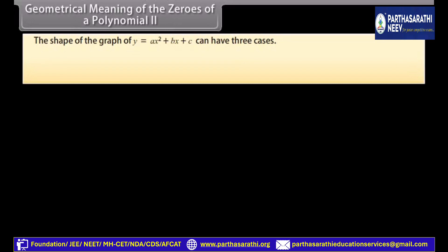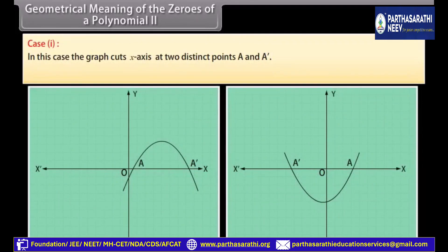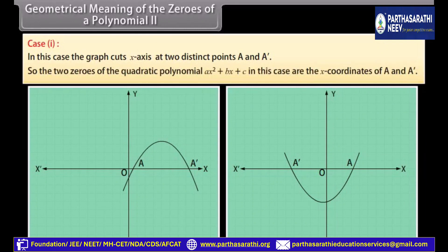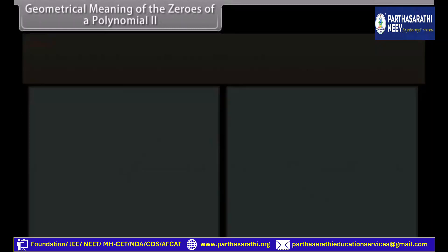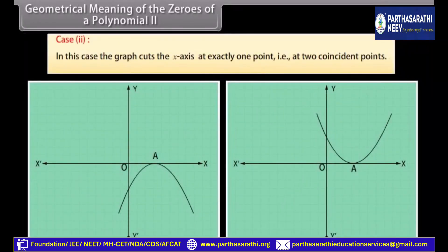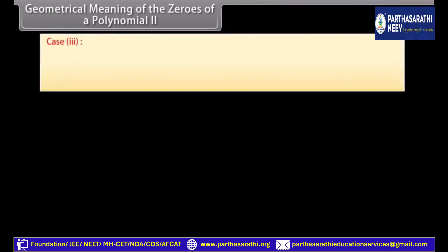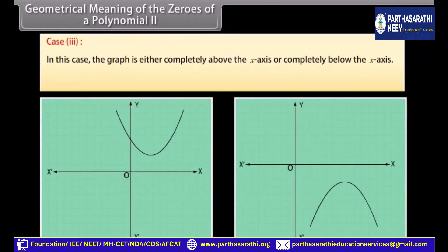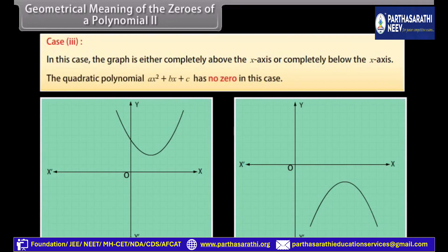The graph of y equals ax squared plus bx plus c can have three cases. Case 1: the graph cuts the x-axis at two distinct points A and A-bar, so the quadratic polynomial has two zeros at those x-coordinates. Case 2: the graph cuts the x-axis at exactly one point — two coincident points A and A-bar coincide to become one point A. Case 3: the graph is either completely above or completely below the x-axis, does not cut the x-axis at any point, and the quadratic polynomial has no zero.